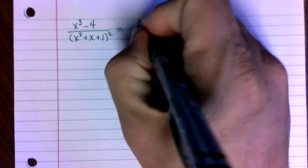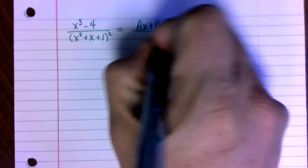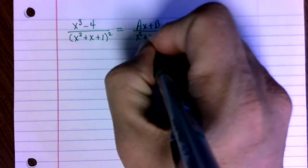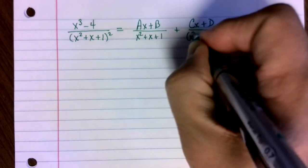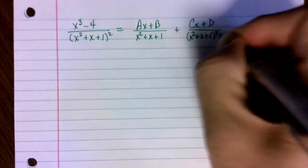So the setup for this one will be ax plus b over x squared plus x plus 1, and then cx plus d over x squared plus x plus 1 quantity squared.